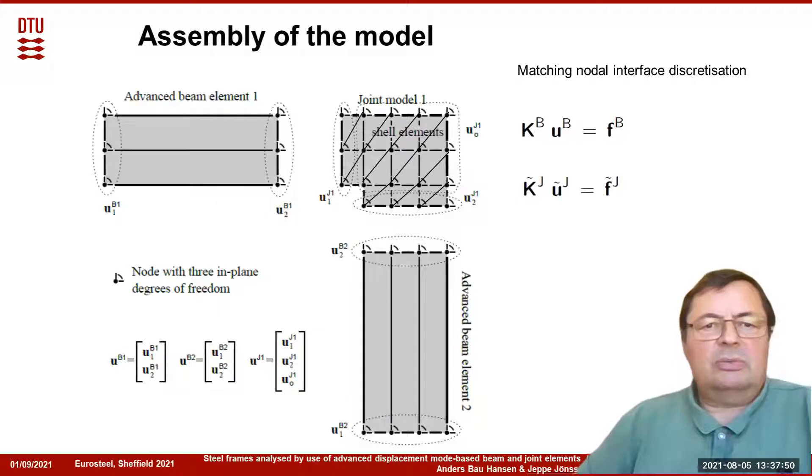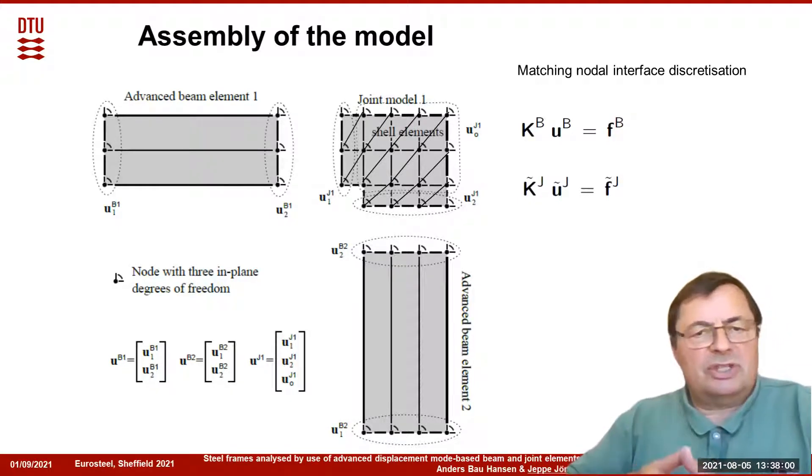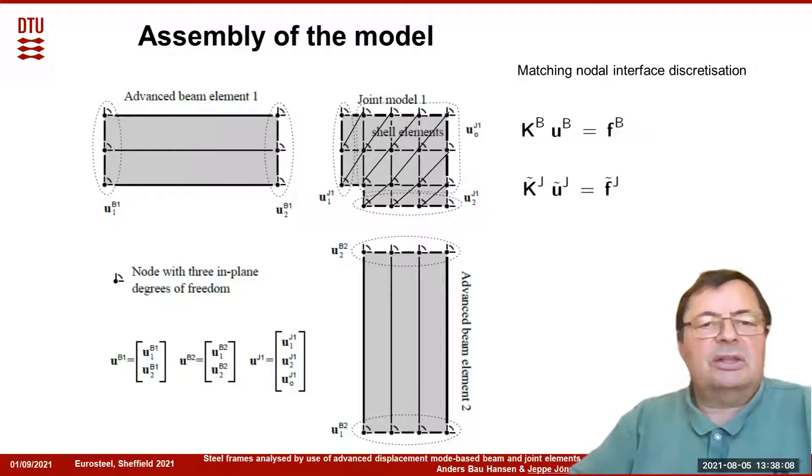We assemble the model with beam elements and joints, and we match the nodal interface discretization. There are the same amount of nodes placed in the same place, and the displacement interpolation should be compatible between the joint and the advanced beam elements. It's not just one node, it's many nodes which we fit together at the interface. We have found the stiffness matrix, conventional stiffness matrix of the beam element with many nodes at each end, and also of the joint.